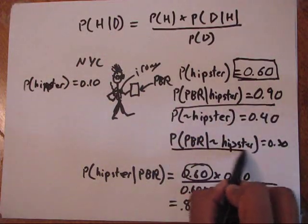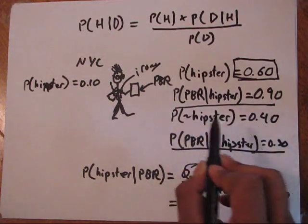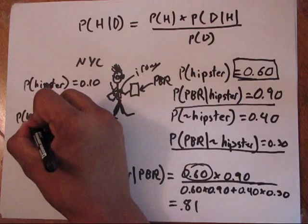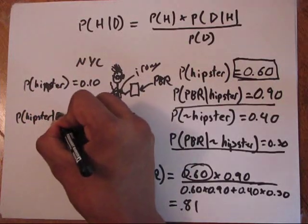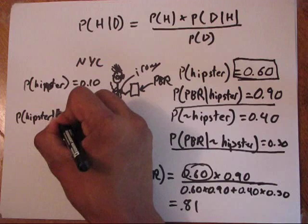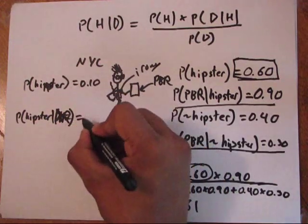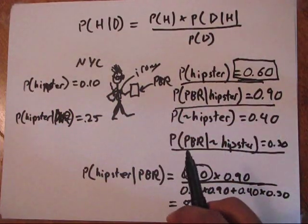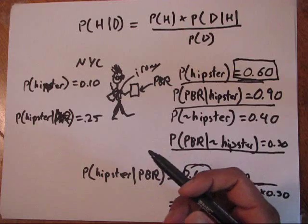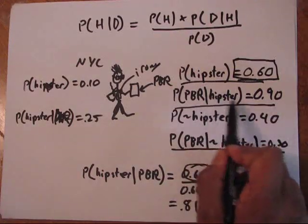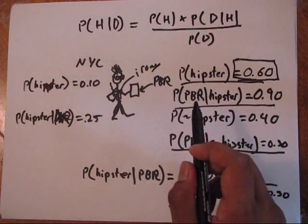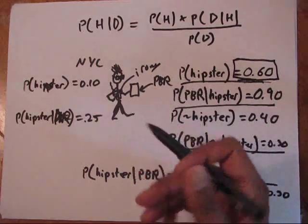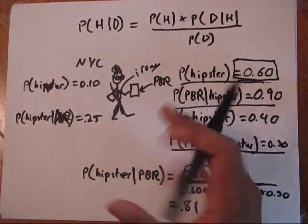If we keep all these other values constant—of course this will be 90% now for not hipster—but if we keep all other values constant, it turns out that the probability of being a hipster given that you're drinking PBR is now about 25%. It's drastically reduced by your knowledge, what you know about the town. This might feel slightly counterintuitive because we just said, if you're a hipster, there's almost 100% chance that you're drinking PBR. But it's all about that prior knowledge—that's the power of Bayes.